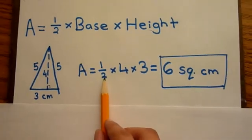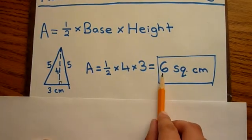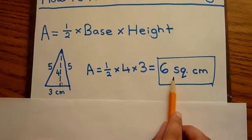So the area is half times 4 times 3. And the answer to that is 6 square centimeters. So that would be the area.